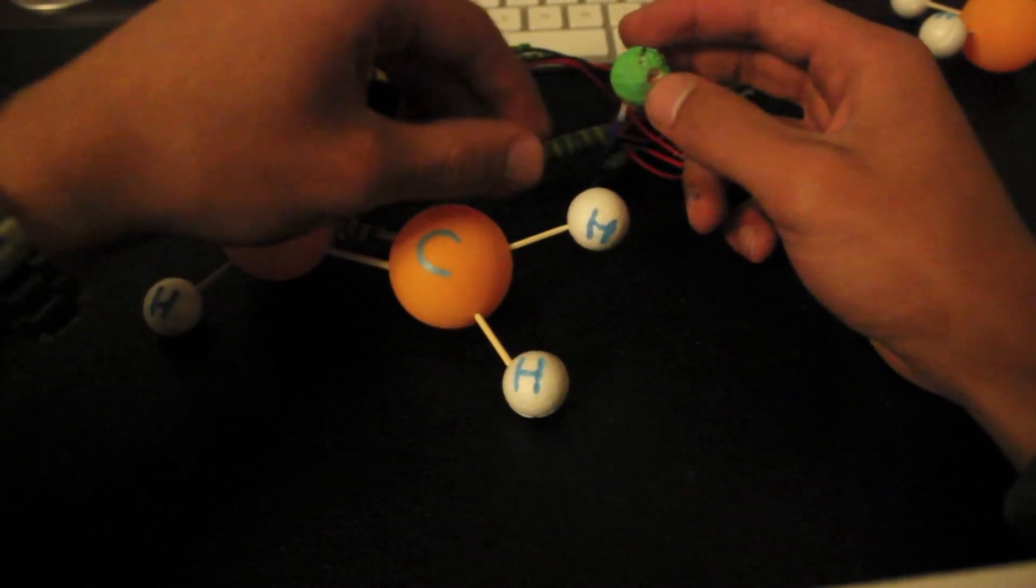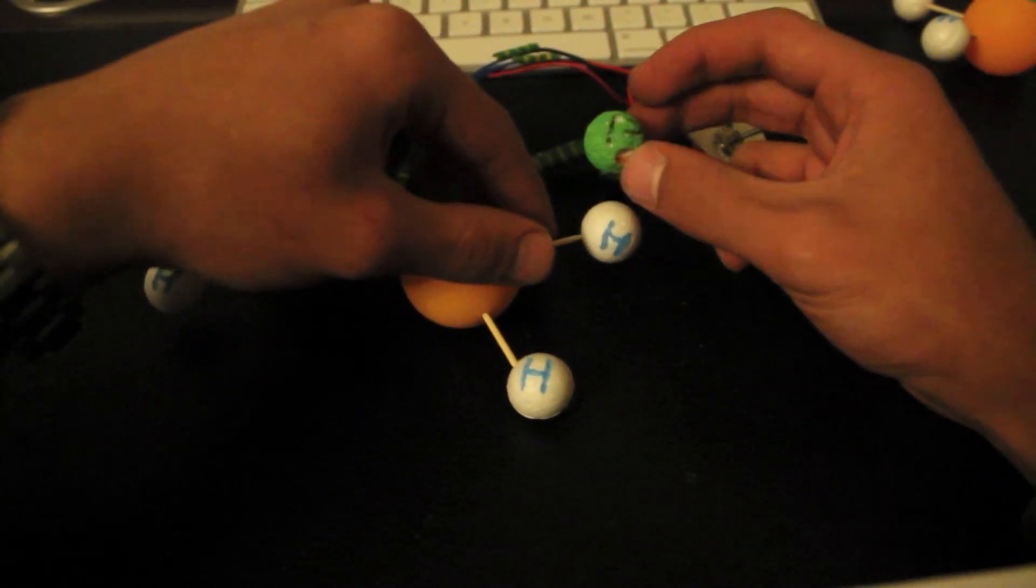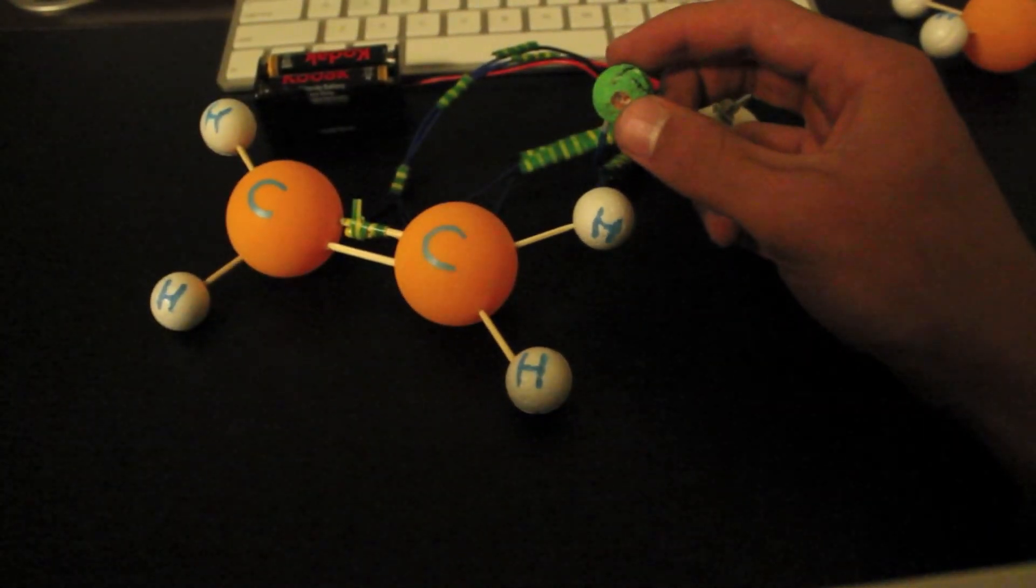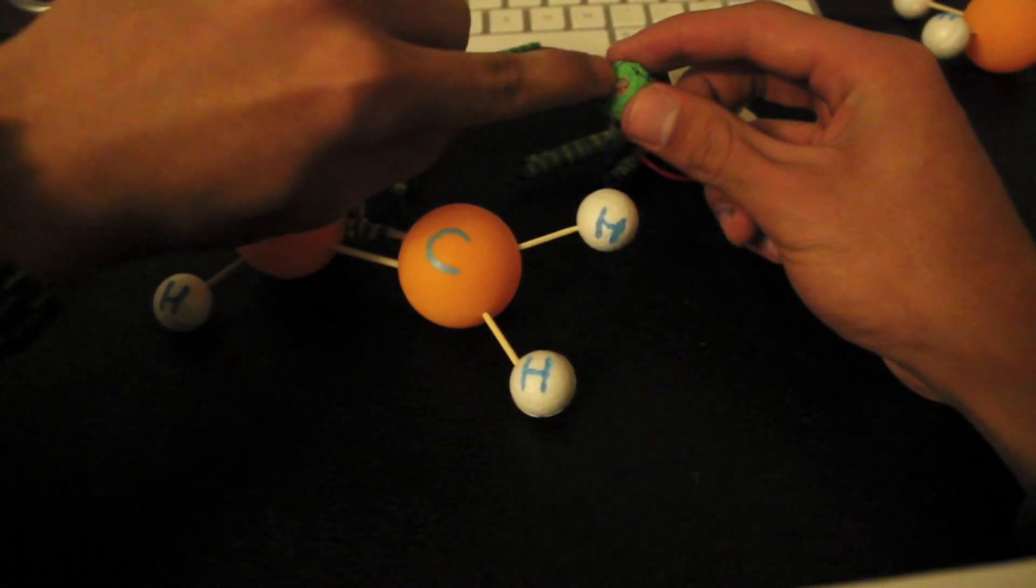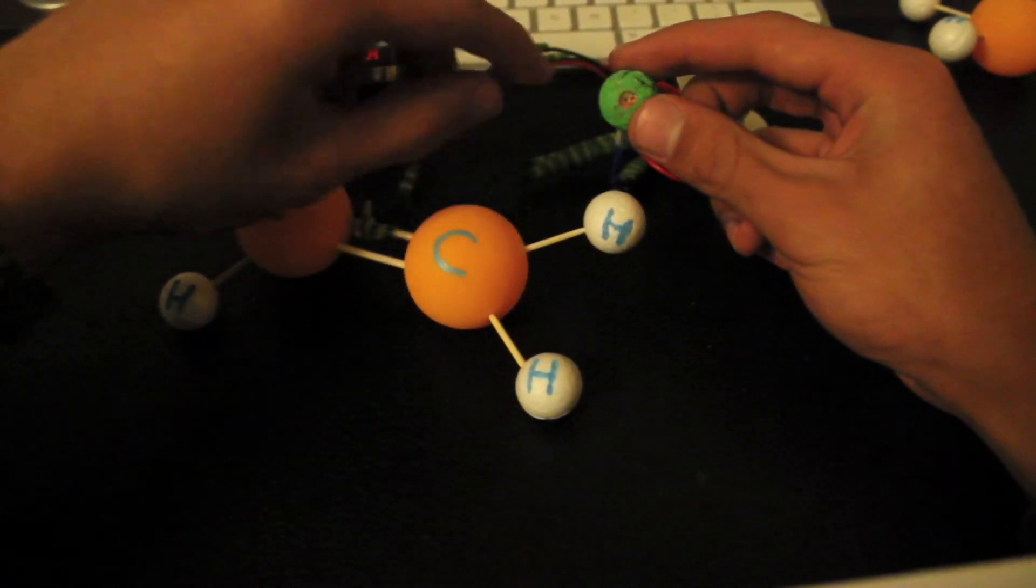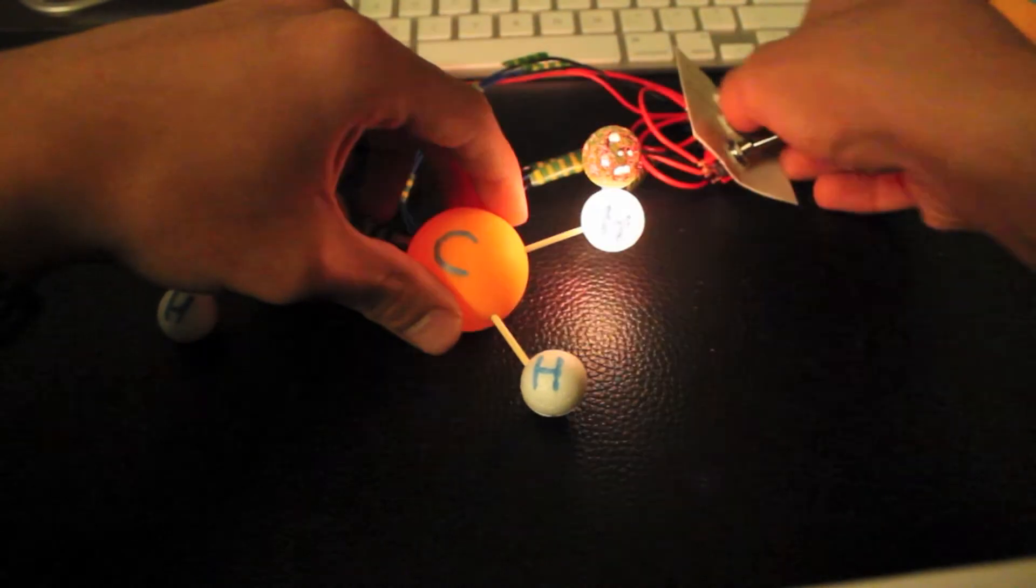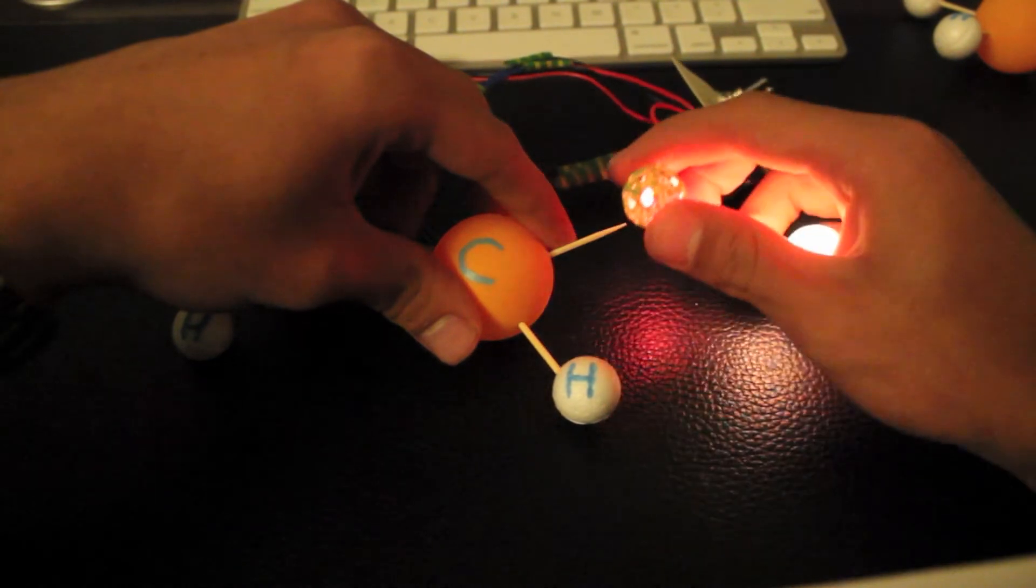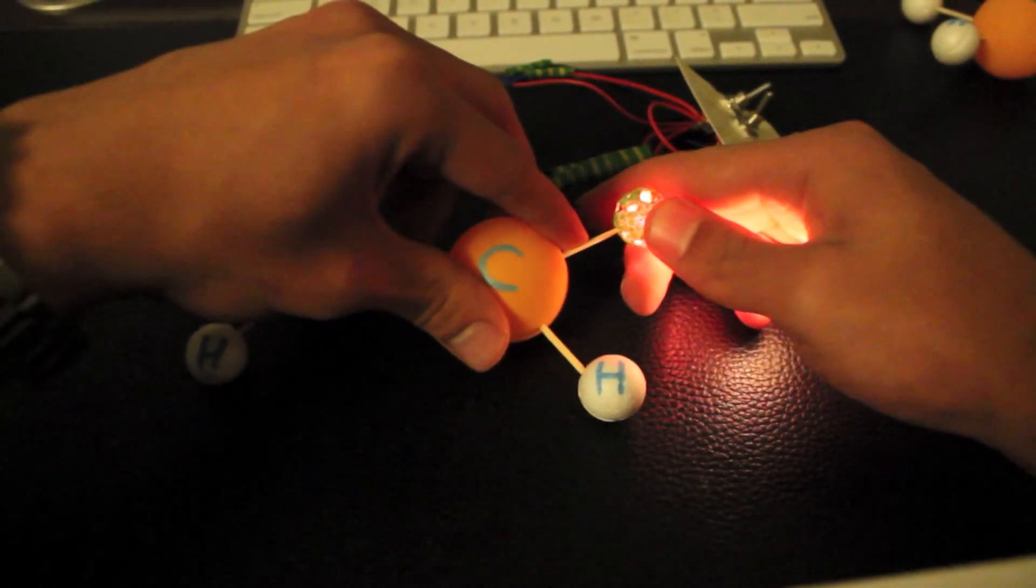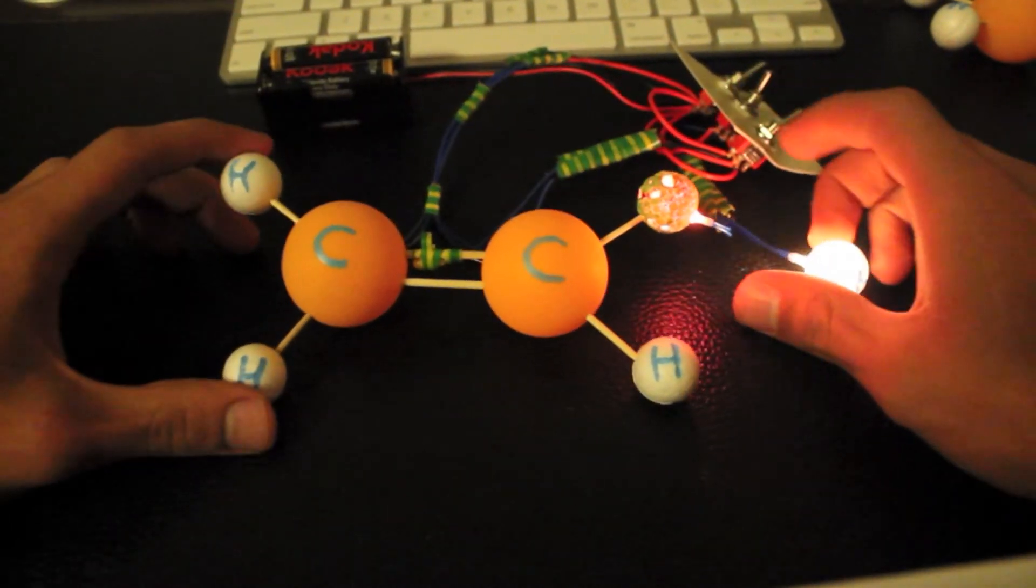So basically what this means is that this chlorine atom by itself is really electronegative, which means electron hungry. It really needs that one more electron to make it stable and happy. So what it does is that it will react with the hydrogen over here. It will pull it out and then it will take the spot of the hydrogen. And this is the activation stage.